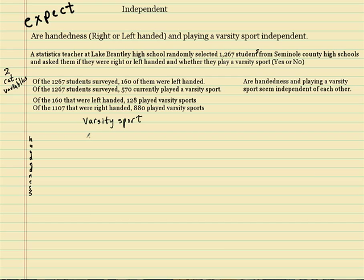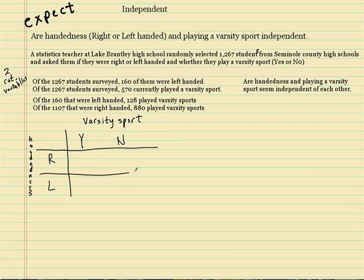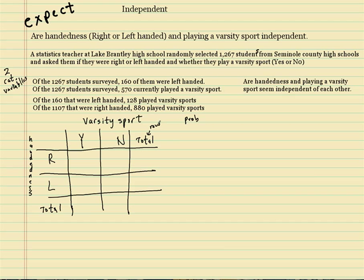Contingency tables are made up of two categorical variables — you'll never see something with quantitative variables here. Varsity sport is one variable and my other one is handedness. My two outcomes for varsity sports are yes, they play or have played varsity sports, or no, they don't. For handedness, it's either right-handed or left-handed. Make sure you're comfortable with rows and columns.